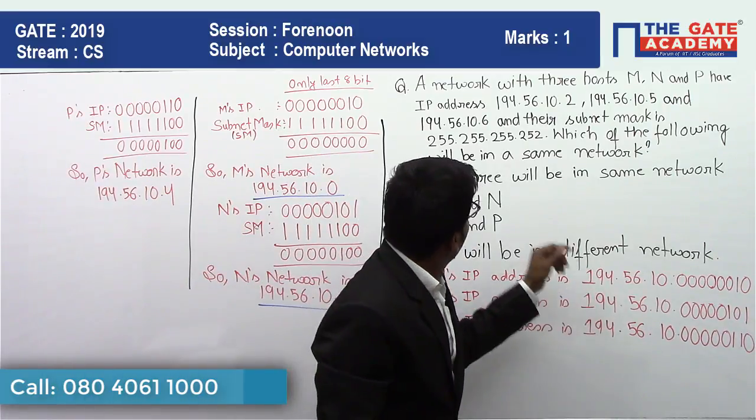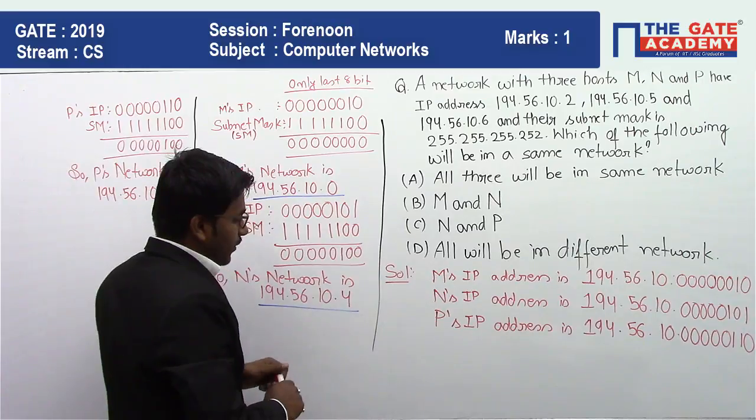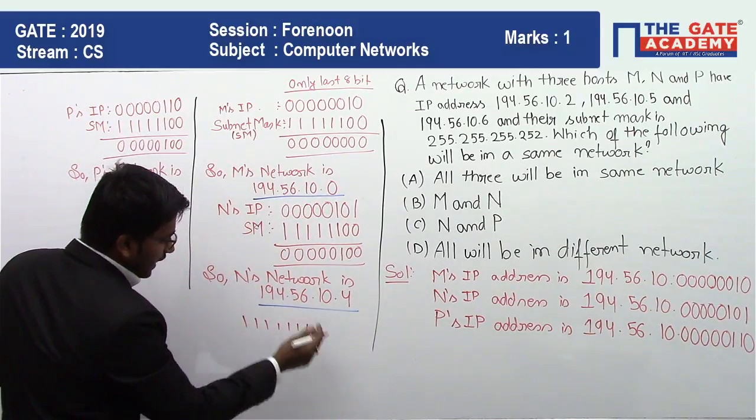Since I am not taking 255.255.255, I am only doing with the last octet because 255 is all ones, and when we multiply all ones with anything, that number will only come.